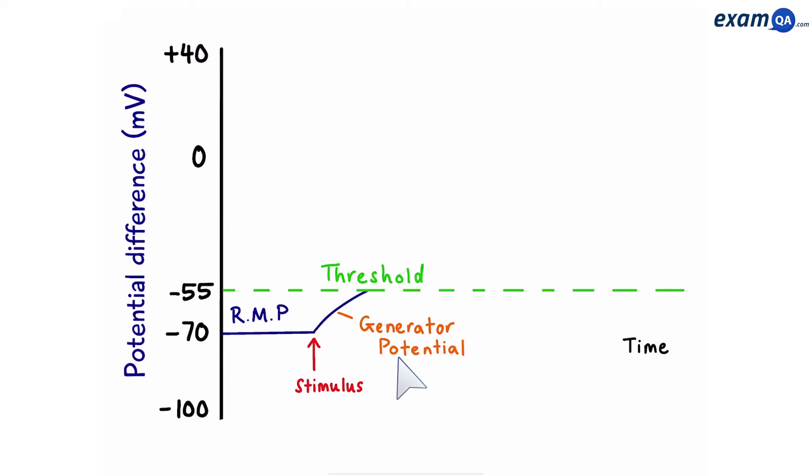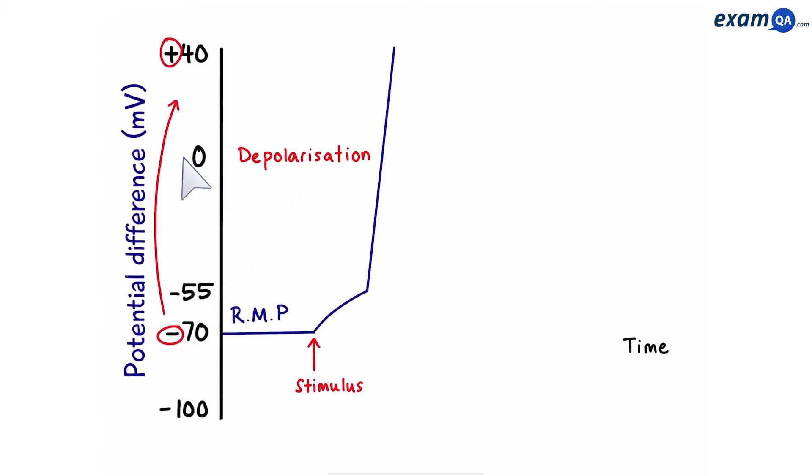Now, once the membrane's potential difference has hit the threshold, minus 55, this causes loads of sodium channels to open up. And now, we have a huge rush of sodium coming into the neuron. This causes the neuron to become even more positive, until it gets to plus 40. This jump from minus 55 to plus 40 is called depolarization. This is because the inside of the membrane was negative, and now it's become positive. So you can say, the poles have swapped.